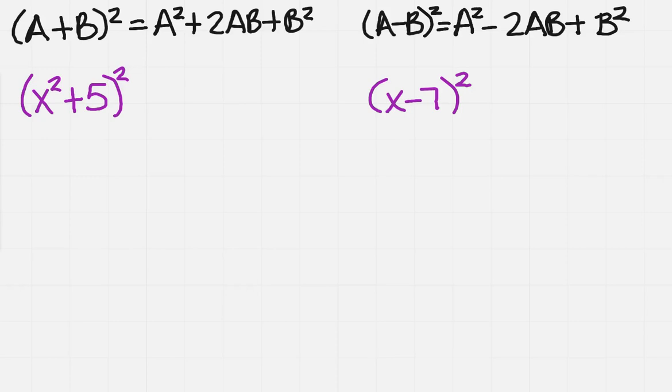We want to take a look at the square of a binomial sum and a binomial difference. And so as you notice, these two look the same, except the middle term. If it's a positive, it's going to be a positive. If it's a negative, it's going to be a negative.